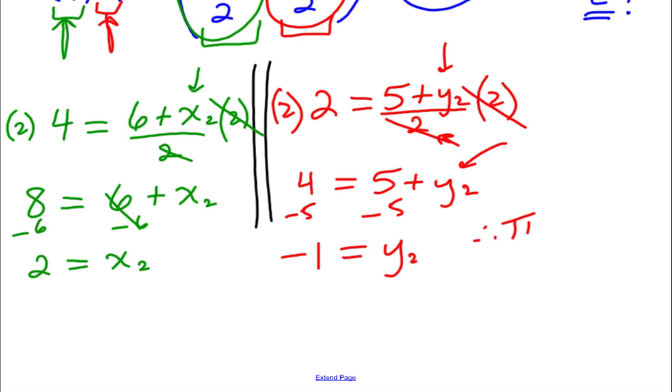So therefore, the other endpoint is, so it goes XY. So 2, negative 1 is the other endpoint.